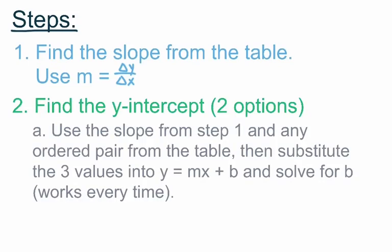Our second step requires that we find the value for the y-intercept, and there are actually two options. The first option will work every single time, but it's a bit more time-consuming. This is the method we've been using going back to Lesson 5.1. What we do for this method is use the slope and any ordered pair from the table — our slope value, our x value, and our y value — giving us three values total. We then substitute those values into our equation.